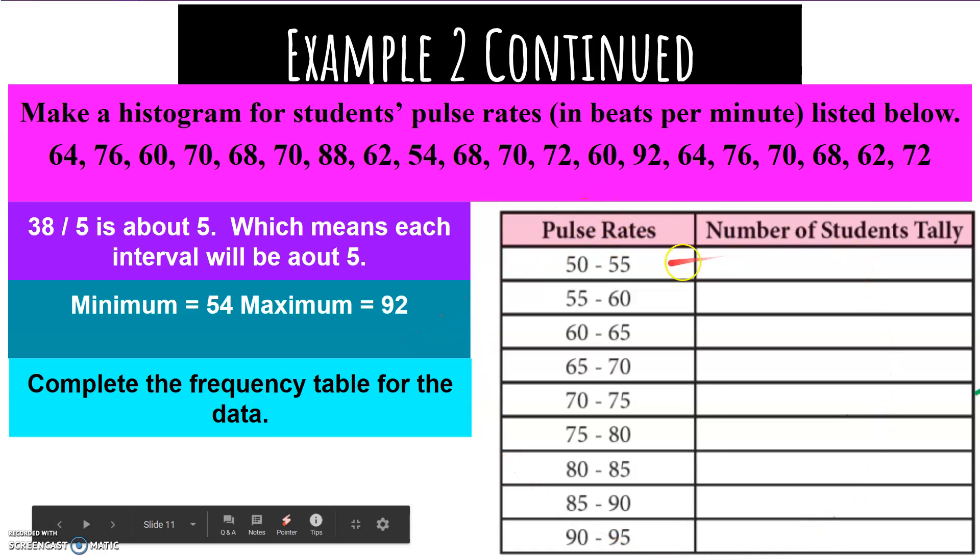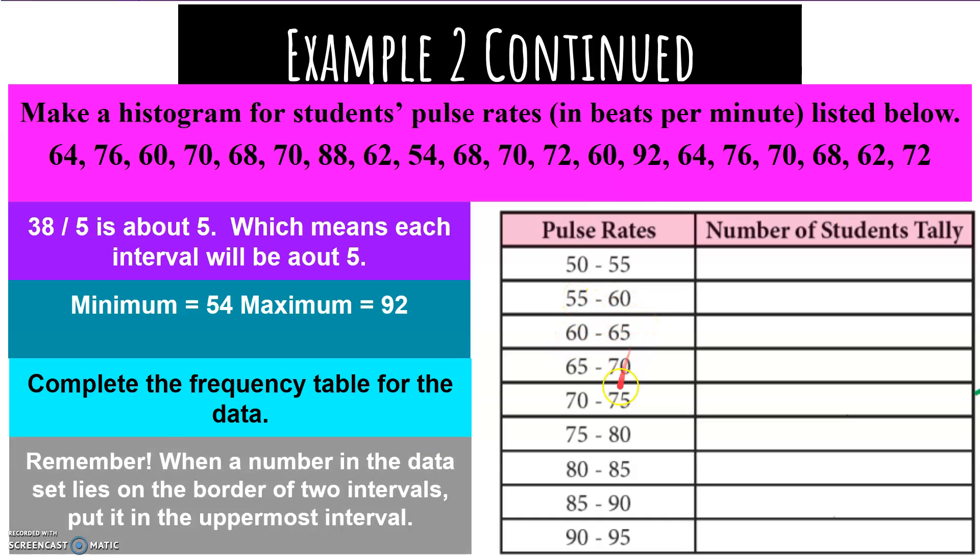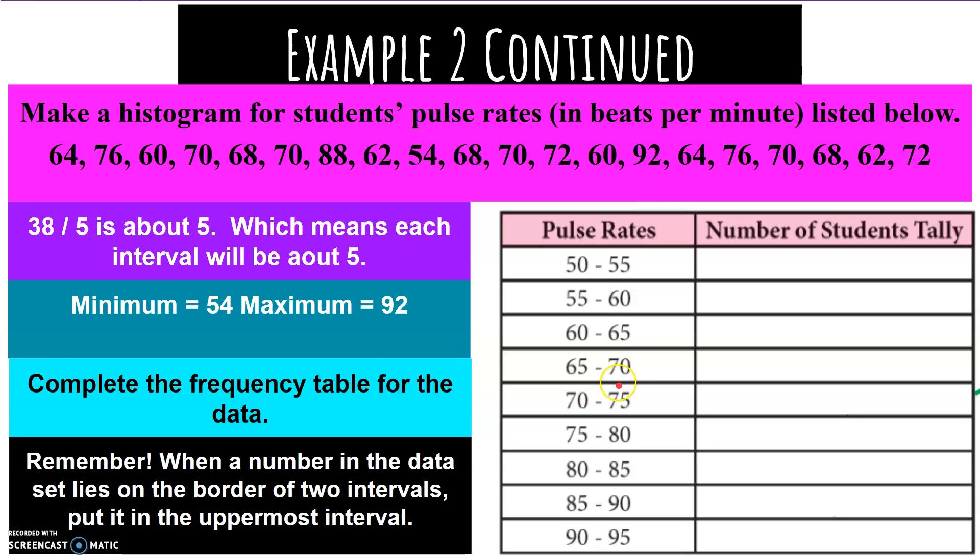This is a frequency table. It's basically a t-chart but with ranges over here instead of one number. This is 50 to 55, 55 to 60, and all numbers that go from 50 to 55 will be here. Specifically, they will go from 50 to 54. This will be 55 to 59, 60 to 64, and so on. When the number in the data lies on the border, it goes in the uppermost. So if it was 55, it would go here.